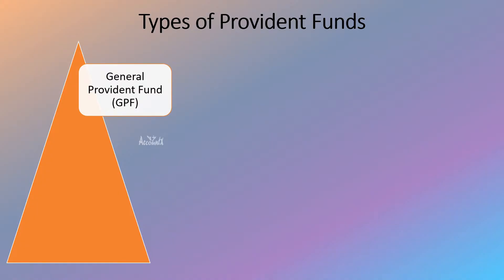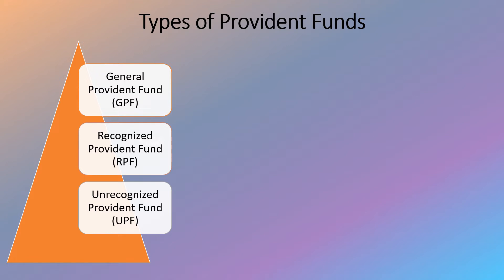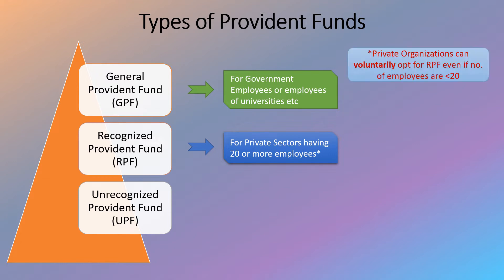First, let's understand the types of Provident Funds. First, General Provident Fund, that is GPF. Then Recognized Provident Fund, that is RPF. Then Unrecognized Provident Fund, let's call it UPF. GPF is for government employees or employees of universities, etc. RPF is for the private sector having 20 or more employees, but private organizations can voluntarily opt for RPF even if the number of employees is less than 20.